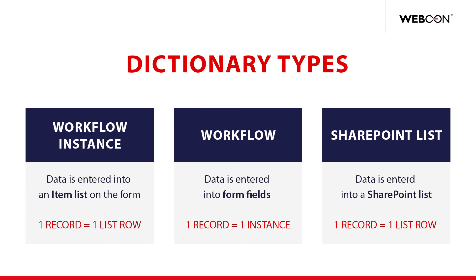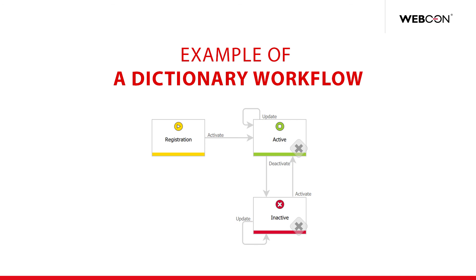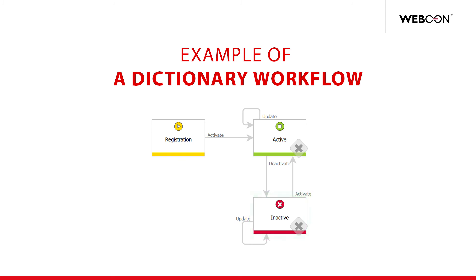For our applications we decided to go with a middle solution where we have a workflow and one instance in this workflow is one record of the dictionary. These workflows are essentially extremely simple — they always have a registration step where we enter the data we want in the dictionary, and we move it to the active step where it is considered fully part of the dictionary. The bottom part is somewhat redundant, but if we want to cycle records — make some inactive and then active again — we can use that, and we can update records at both the active and inactive steps.